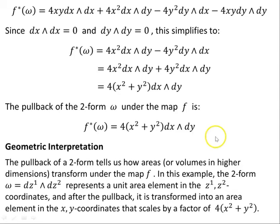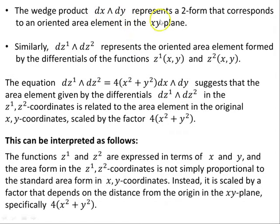What is the interpretation of this result? The pullback of a two-form tells us how areas — or volumes in higher dimensions — transform under the map F. In this example, the two-form omega = dZ1∧dZ2 represents a unit area in the Z1, Z2 coordinates. After the pullback, it is transformed into an area element in the XY coordinates that scales by a factor of 4(x²+y²). The equation dZ1∧dZ2 = 4(x²+y²) dx∧dy shows that the area element in Z1, Z2 coordinates is related to the area element in the original XY coordinates, scaled by this factor.